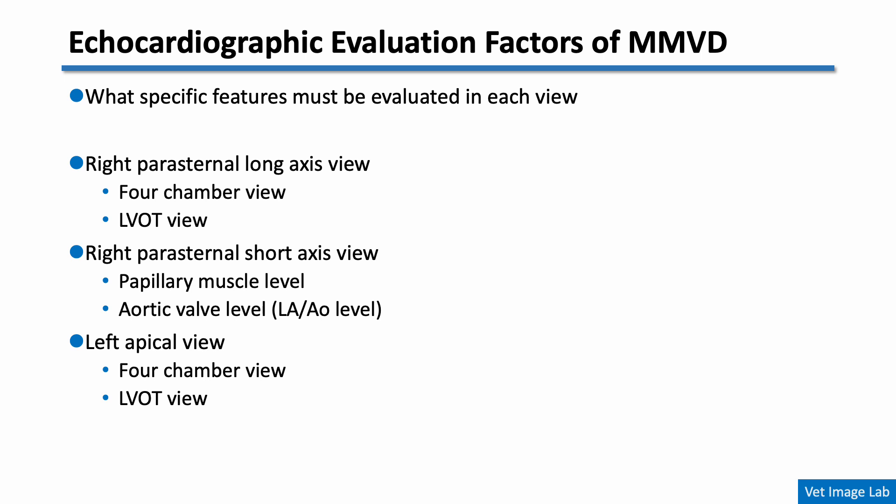Just like in real clinical practice, we're going to examine each standard echocardiographic view step-by-step: from the right parasternal long axis, right parasternal short axis, and left apical window — focusing on what specific features must be evaluated in each image, and what characteristic changes we expect to see in cases of MMVD.